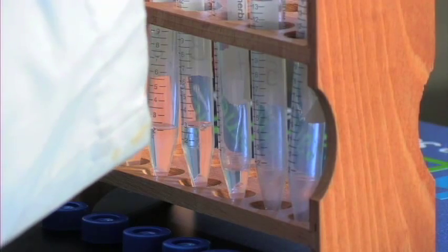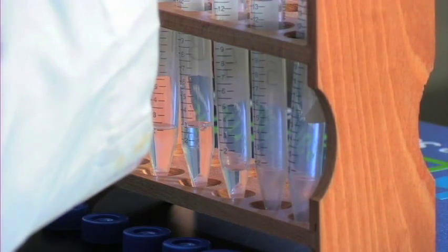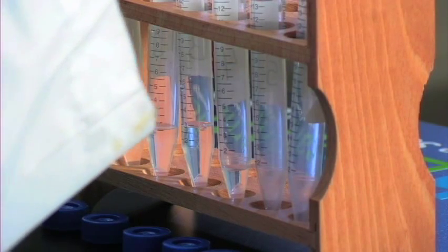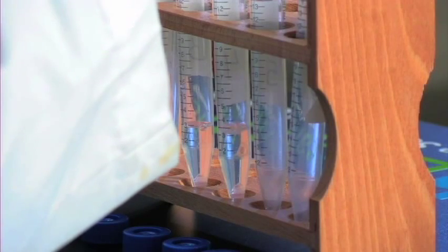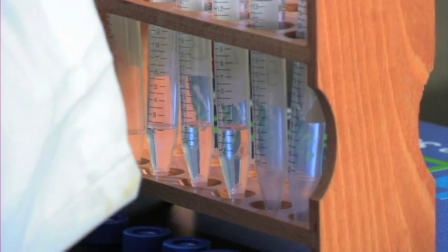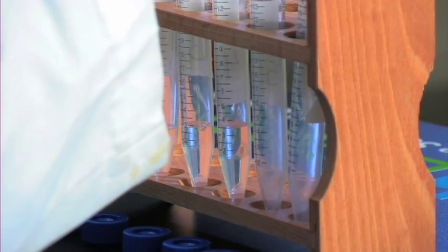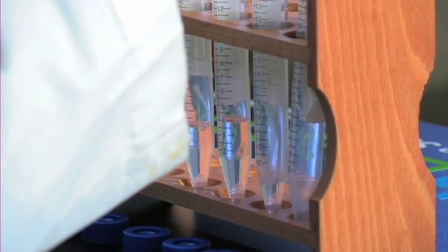Each of these graduated centrifuge tubes are filled with increasing amounts of acetone. The first tube has one milliliter of acetone and it increases by one up until six milliliters in the final tube or tube number six.